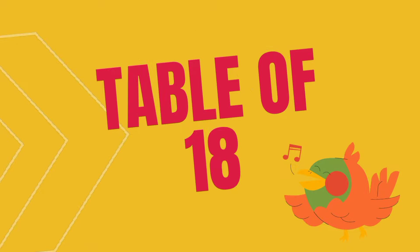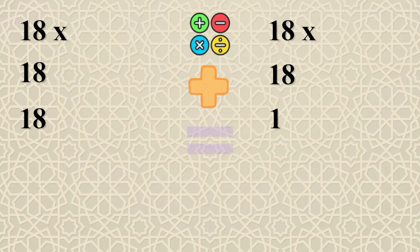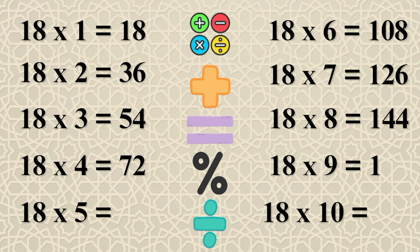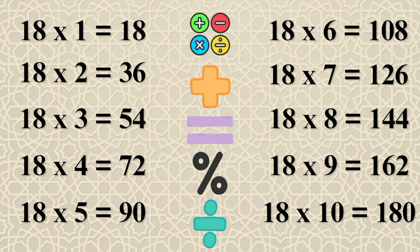Table of 18: 18×1=18, 18×2=36, 18×3=54, 18×4=72, 18×5=90, 18×6=108, 18×7=126, 18×8=144, 18×9=162, 18×10=180.